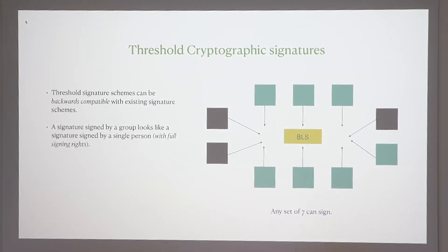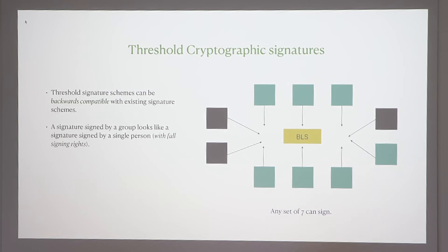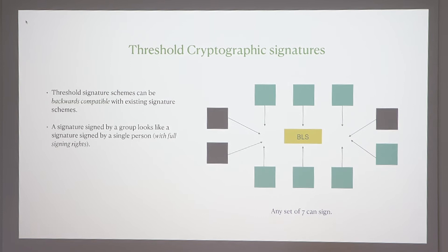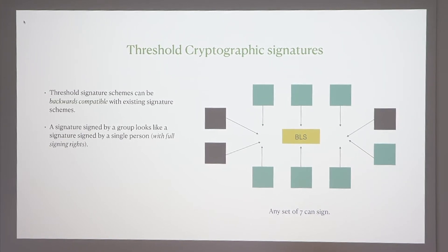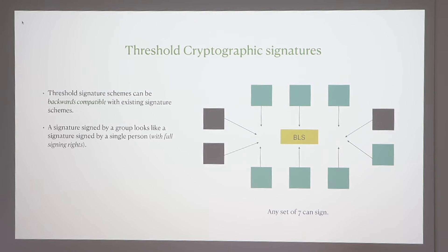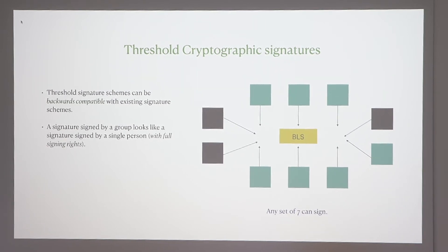An important feature of a threshold signature is that it must be backwards compatible with the existing signature scheme. We don't want a seven-out-of-ten signature to look very different from a single person signing — we want it to be indistinguishable, because a Bitcoin transaction is a Bitcoin transaction. This backwards compatibility is easier with some signature schemes than others.